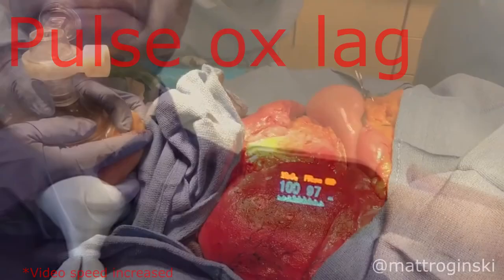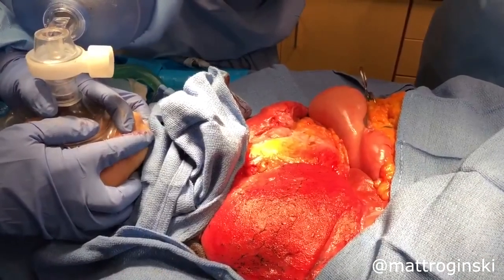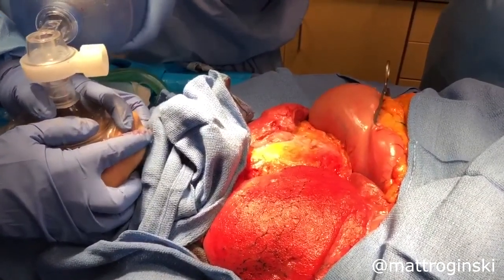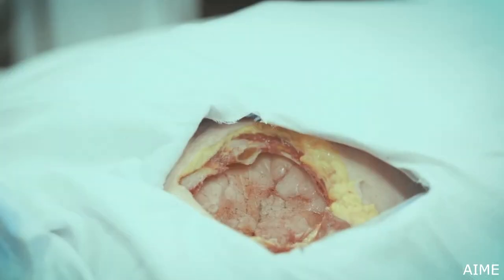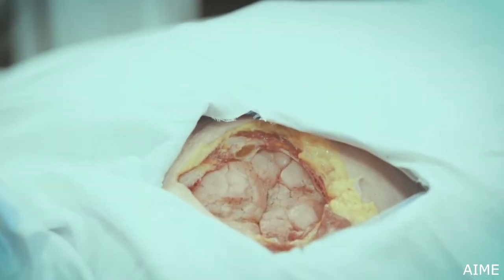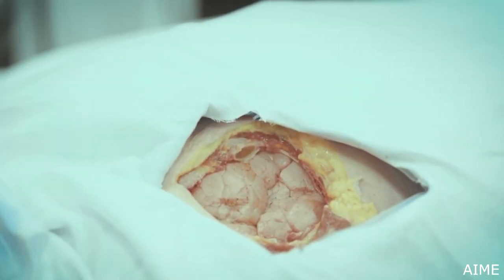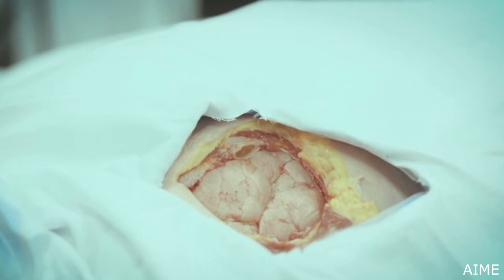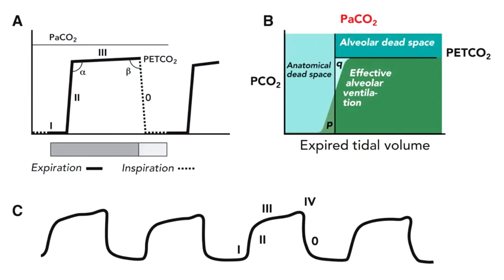Avoid aggressive bagging, which is harmful and will cause stomach insufflation. If you are using the protected CPAP setup, you really only need to bag twice for full expansion of the lung. This is a situation where inline capnography is especially helpful because you can monitor the waveform and ensure a proper seal.